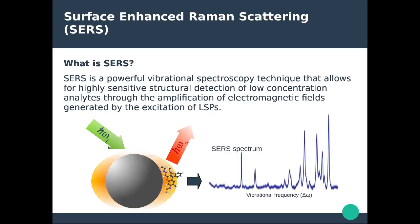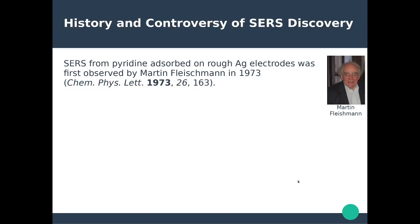If you have a plasmonic nanoparticle and you excite it at the localized surface plasmon resonance frequency, the molecule sitting in the strong electromagnetic field will give rise to a SERS spectrum that is much more enhanced compared to a regular Raman spectrum. The process is the same: you send light in at a given frequency, detect light out at a different frequency, take the difference between those two, and obtain a Raman spectrum. With only molecules you get a regular Raman spectrum; with molecules and plasmonic nanoparticles nearby, you get the SERS spectrum.